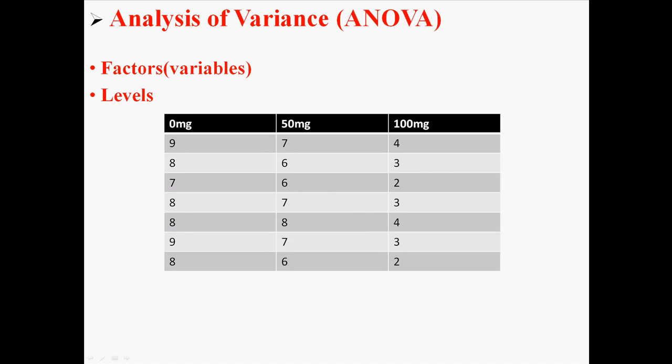So IQ is an example with three groups: 0mg, 50mg, and 100mg. Those are different dosages. So in this case your factor is dosage, and your dosage factor has three levels: 0, 50, and 100mg.